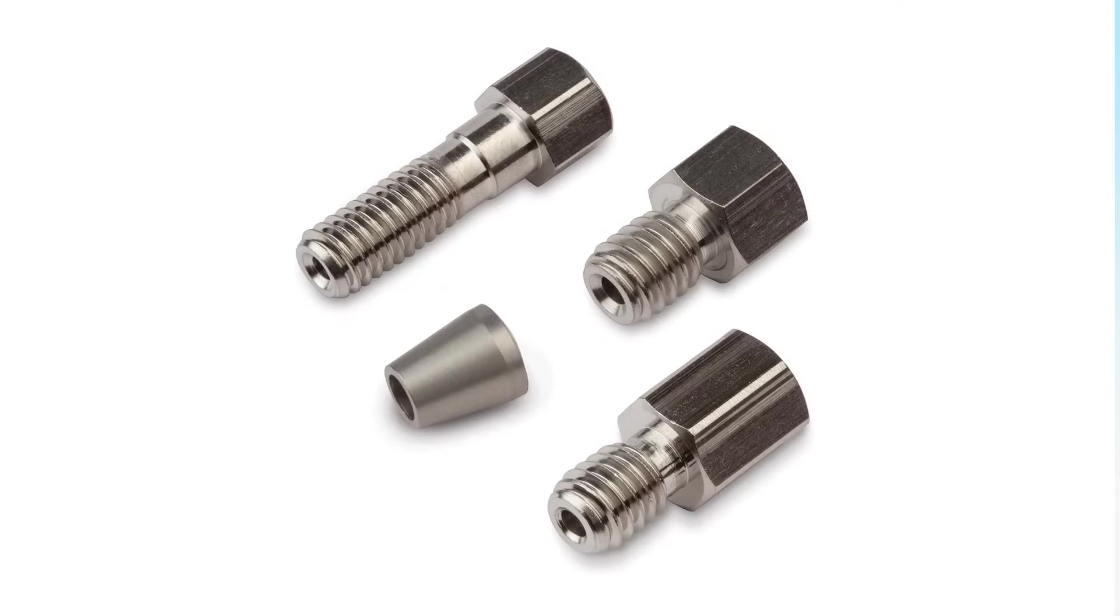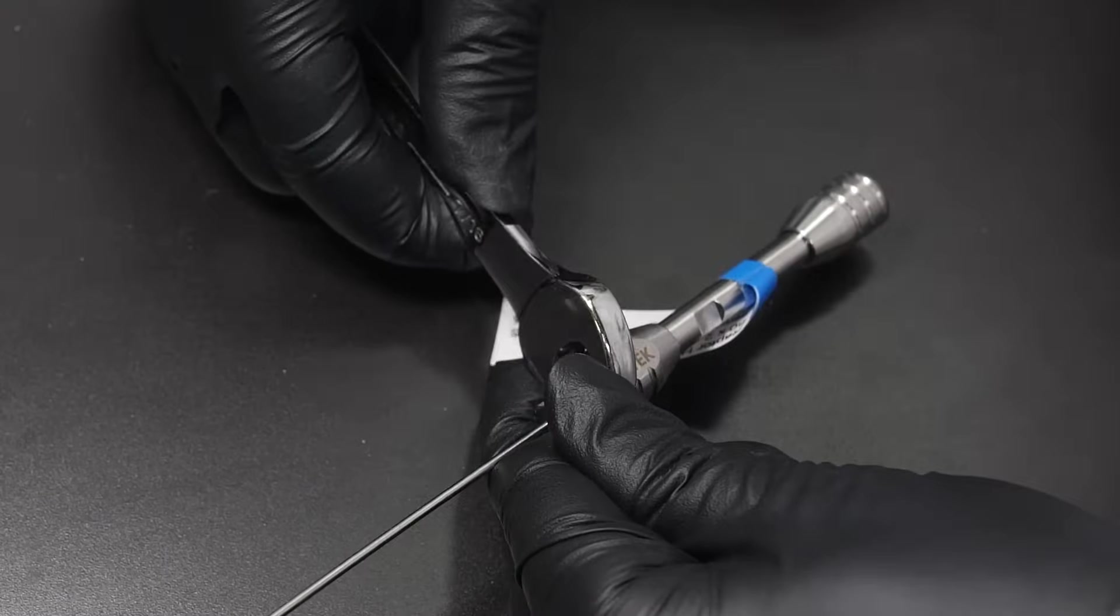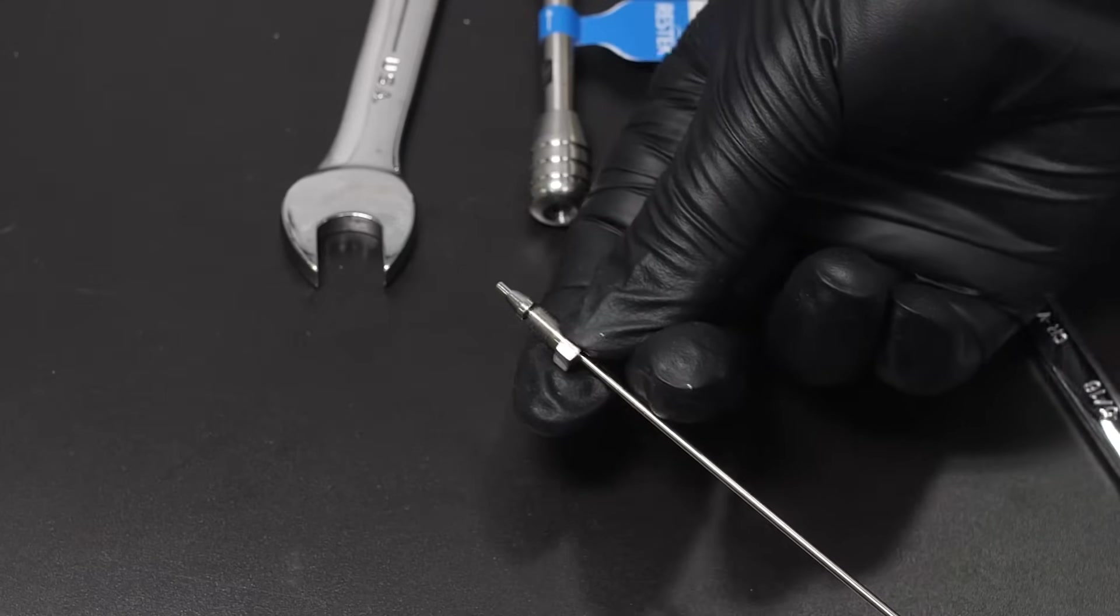Stainless steel fittings and connectors are good choices for higher pressures. However, one major drawback to stainless steel fittings is that they require wrenches for column installation, and tubing depth can only be set once as the ferrules bite into the tubing.